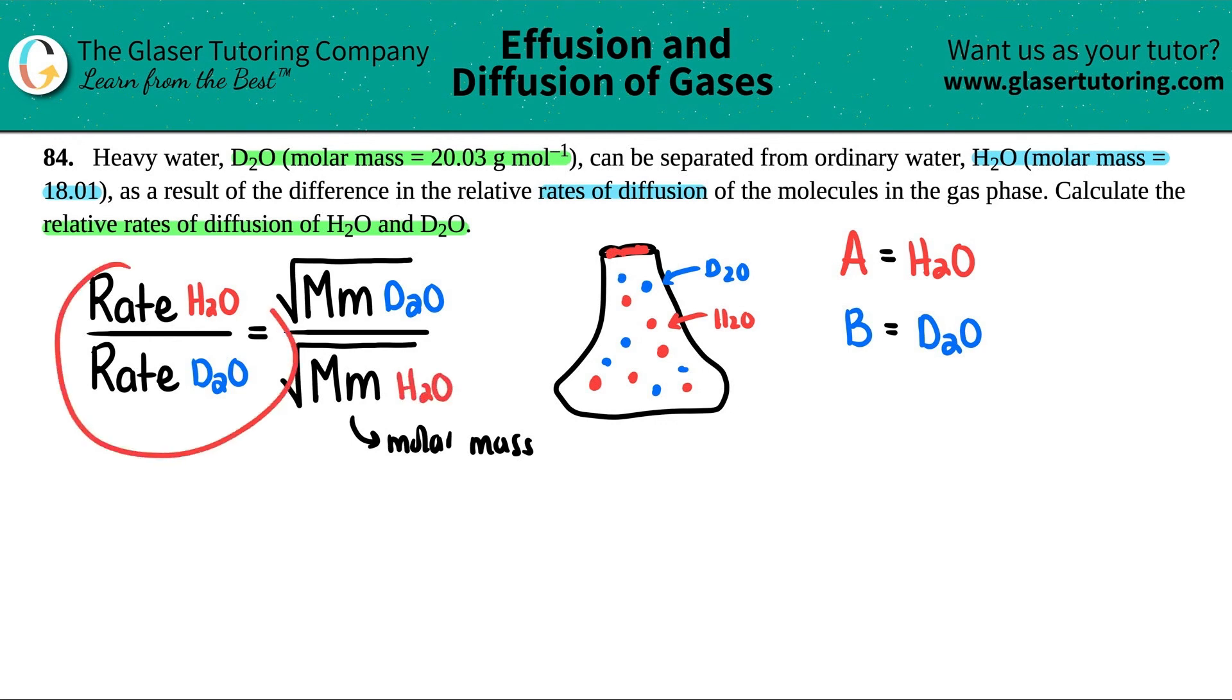Now, we don't know what this is. That's why we're looking for a relative rate. So we're looking for a ratio. So I'm going to just leave this as whatever this is. We could just basically call it H2O over D2O.